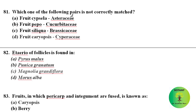Which of the following pairs is not correctly matched? Fruit cypsela in family Asteraceae — correct. Fruit pepo in family Cucurbitaceae — correct. Fruit siliqua in Brassicaceae — correct. Fruit caryopsis in Cyperaceae — incorrect; caryopsis is present in family Poaceae. So this is the incorrect match.